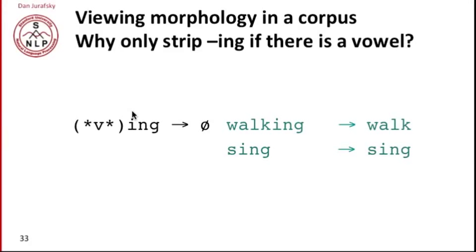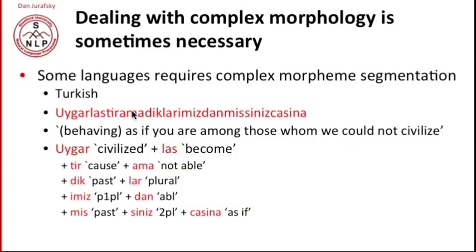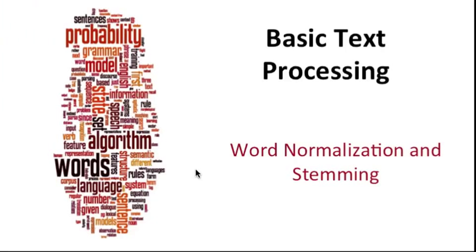So that's a simple example of morphology and how we can use Unix tools to do a little corpus linguistics to help write rules of this kind. It turns out that in some languages, much more complex morphology is necessary — Turkish is the famous example. There's a Turkish word meaning 'behaving as if you were among those whom we could not civilize' — and in Turkish, that's one word, with a civilize stem and affixes meaning 'to become,' 'cause,' 'not able,' and so on. So in languages like Turkish, and as we saw for long compound nouns in German, we need richer and more complex morpheme segmentation. So we've seen word tokenization, and now that words must be normalized and stemmed to map them to a normal form.